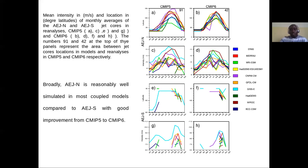In terms of intensity, some models like GISS and MIROC6 overestimate the African East Allegiance core intensity in the CMIP5 version compared to CMIP6, where we can also see some overestimation but not far from reanalysis. This is also observed for the southern component, where we have very strong overestimation of the intensity of the jet in the GISS model in the CMIP5 version.